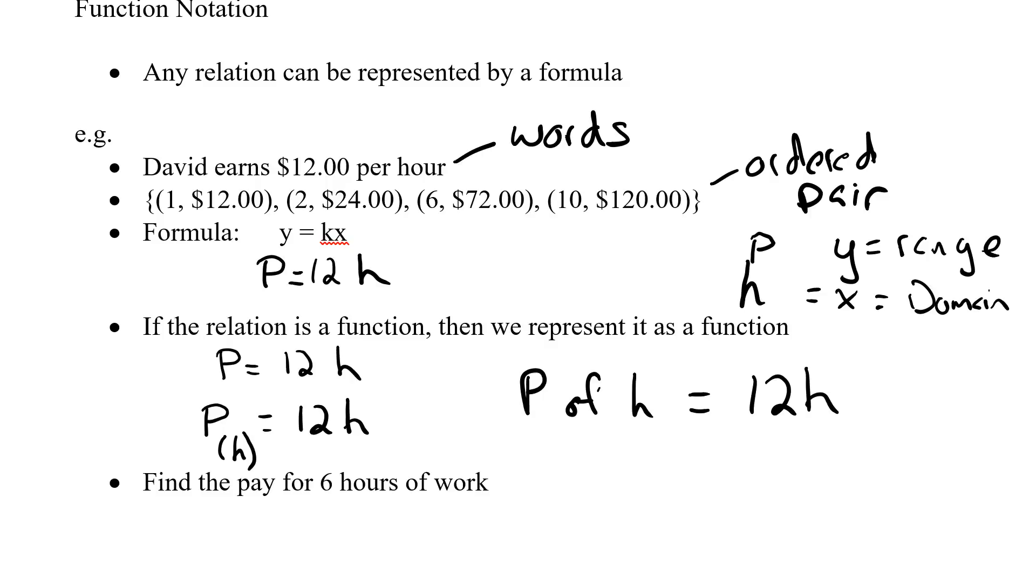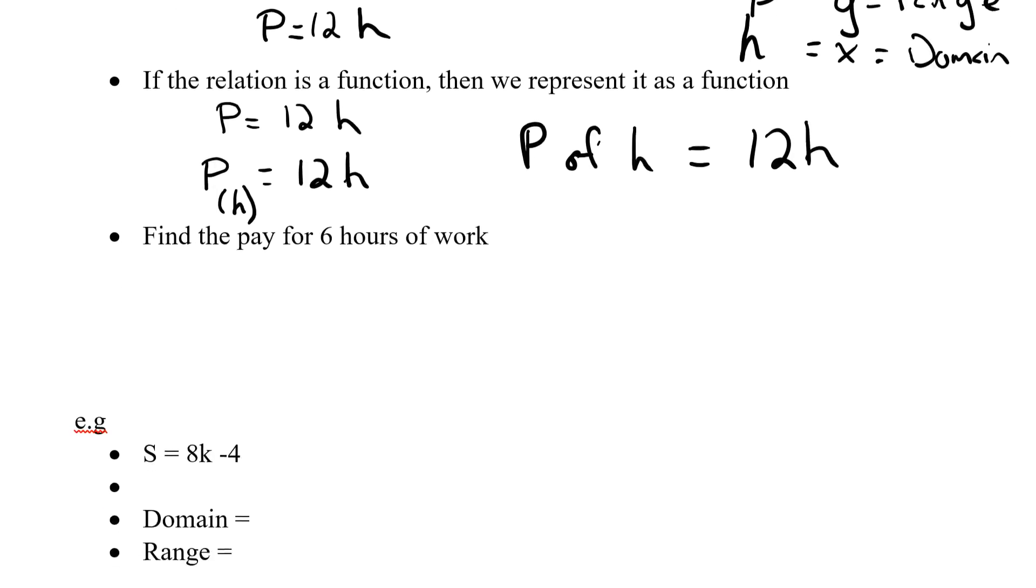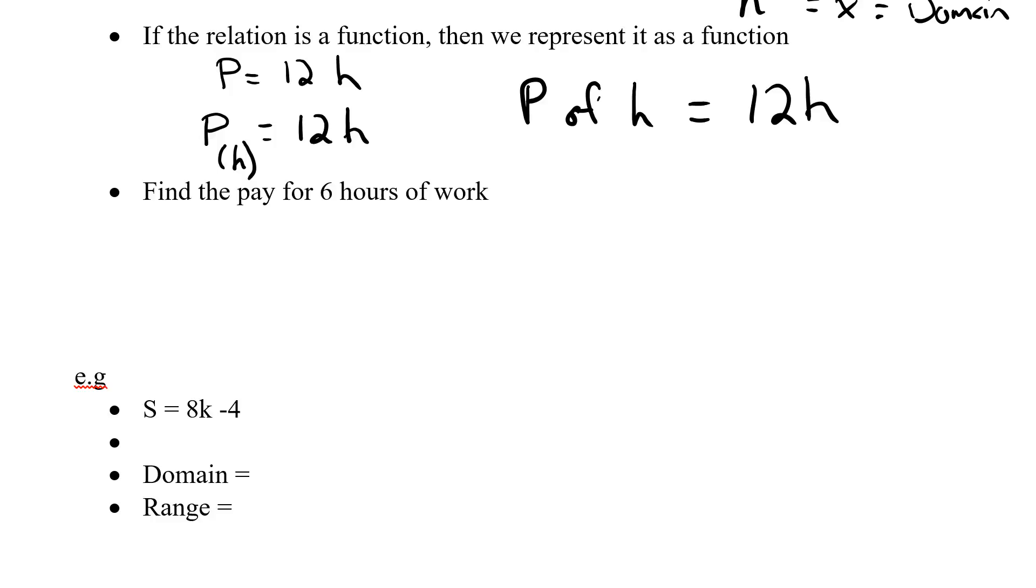So how can we actually use this now? Find the pay for 6 hours work. 6 is our hours, this is our x variable. So I can say p, and now my h, I know I'm looking for 6 hours. So p of 6, the pay for 6 hours equals 12 times 6. P of 6 is equal to 72. What we say here is the pay for 6 hours is $72.